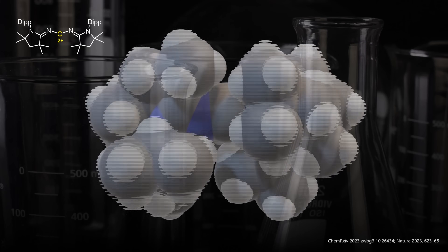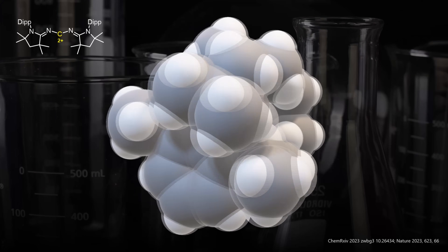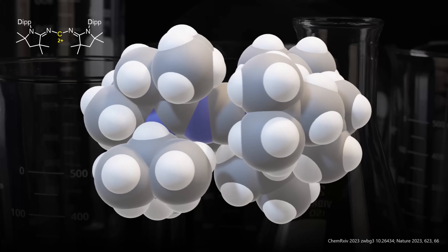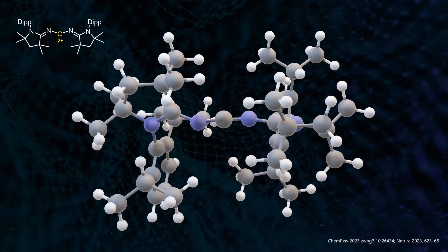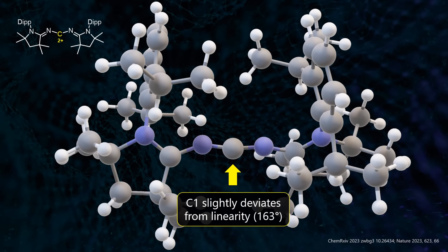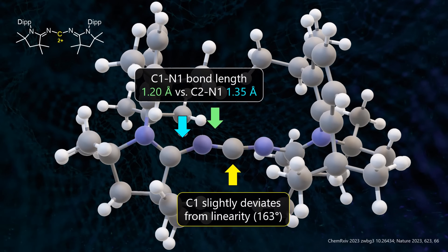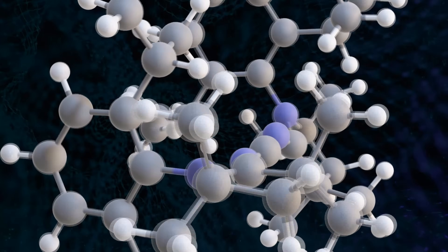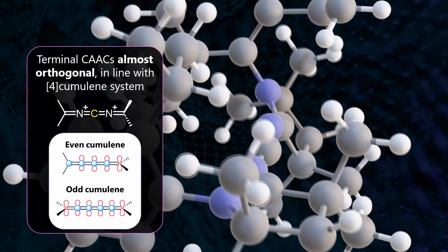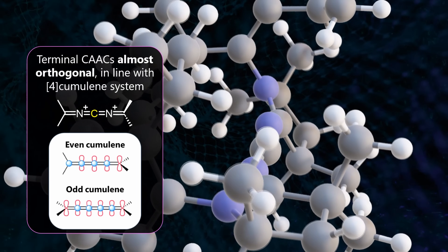The space-filling model clearly illustrates the large steric profile of the diisopropylphenyl groups, which shields the dication even from coordination of the triflate anhydrides — located further away in an outer sphere. The system adopts a zigzag structure. The central carbon is almost linear with a bond angle of 163 degrees. The C1–N1 distance is significantly shorter than C2–N1, suggesting a higher degree of multiple bonding, rationalized through the resonance structure featuring the triple bond. Both amino rings lean to the same side, but are just short of orthogonal with an 80-degree torsion angle.